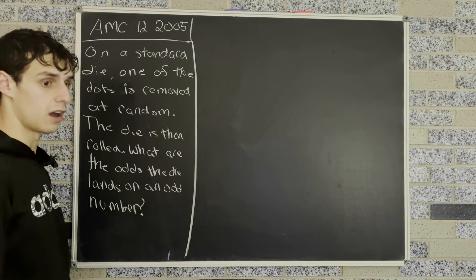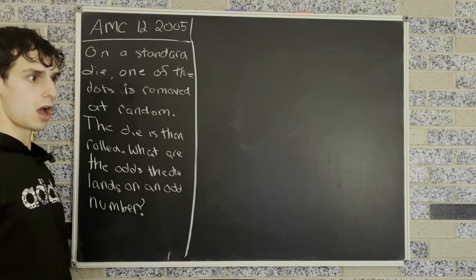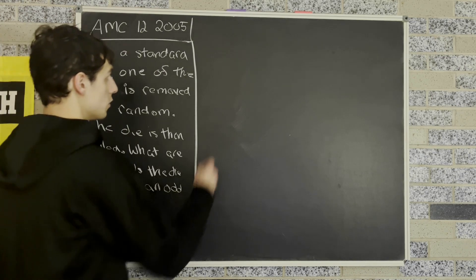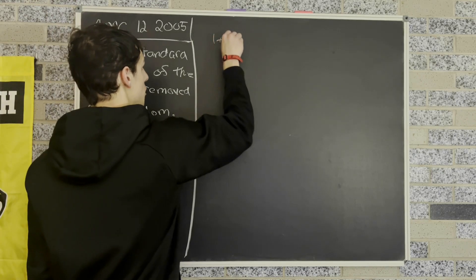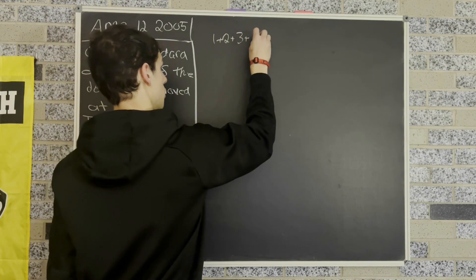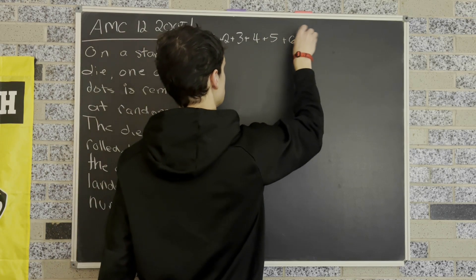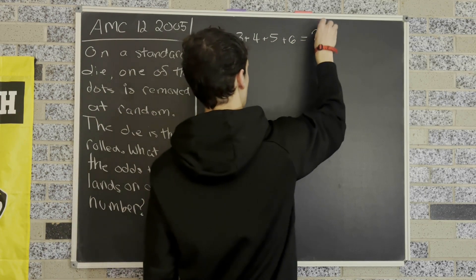First, what we want to do is figure out the odds of a dot being removed from an odd number versus an even number. So let's count up all the dots on the die. We have 1 plus 2 plus 3 plus 4 plus 5 plus 6, and that's going to be equal to 21.